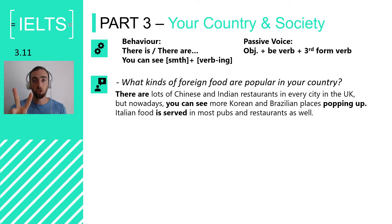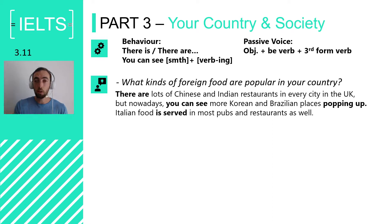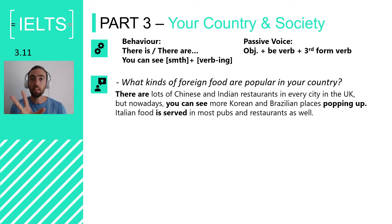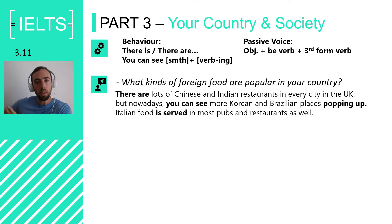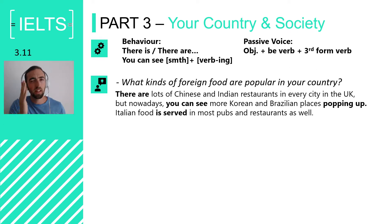I've used both structures here. 'There are lots of Chinese and Indian restaurants' — that's the 'there are' structure. 'You can see Korean and Brazilian places popping up' — that's the 'verb-ing' construction. And 'Italian food is served' — that's the passive voice. The passive voice allows you to talk about other people without having to name them, because it's obvious — we know it's being served by waiters and waitresses. You don't have to say it.